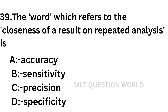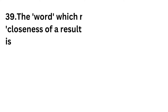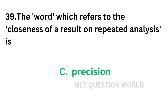Question number 39: The word which refers to the closeness of a result on repeated analysis is — option A: Accuracy, option B: Sensitivity, option C: Precision, option D: Specificity. These terms have been discussed in detail in previous videos. The correct answer is option C, precision. Closeness of a result on repeated analysis is precision.